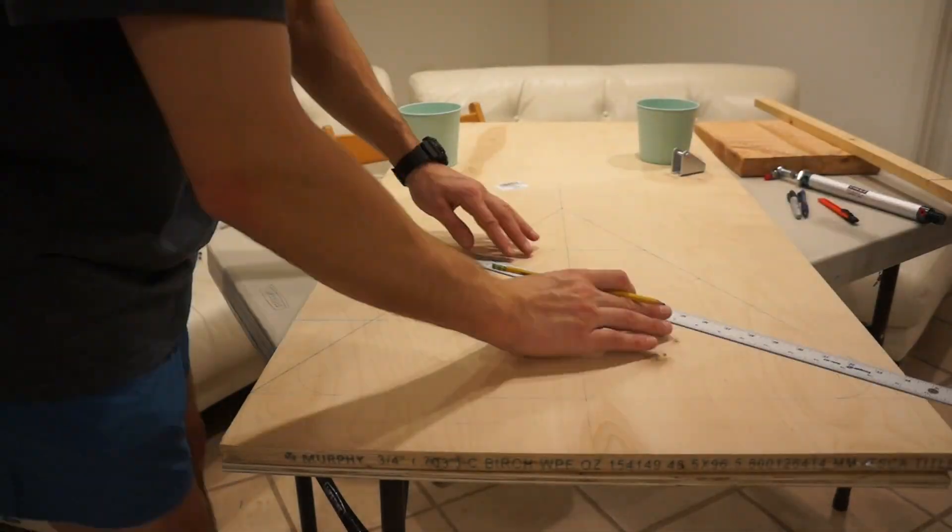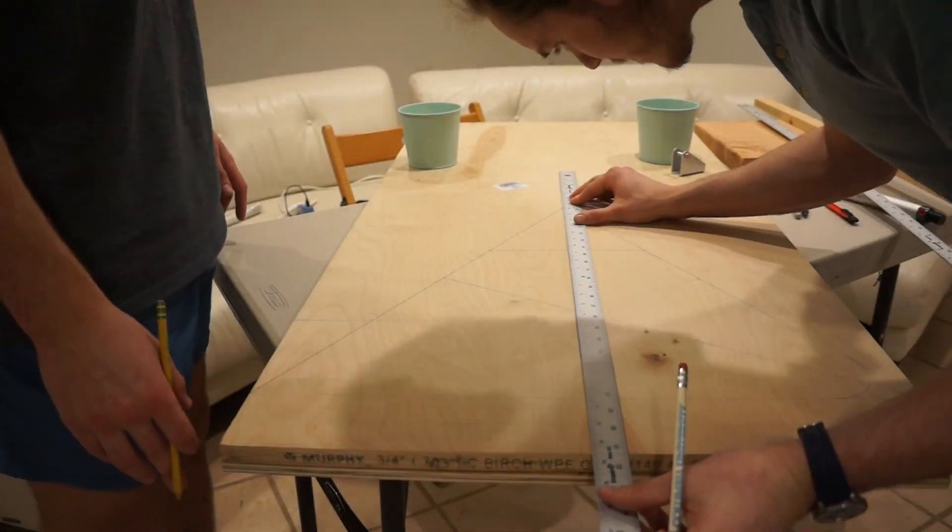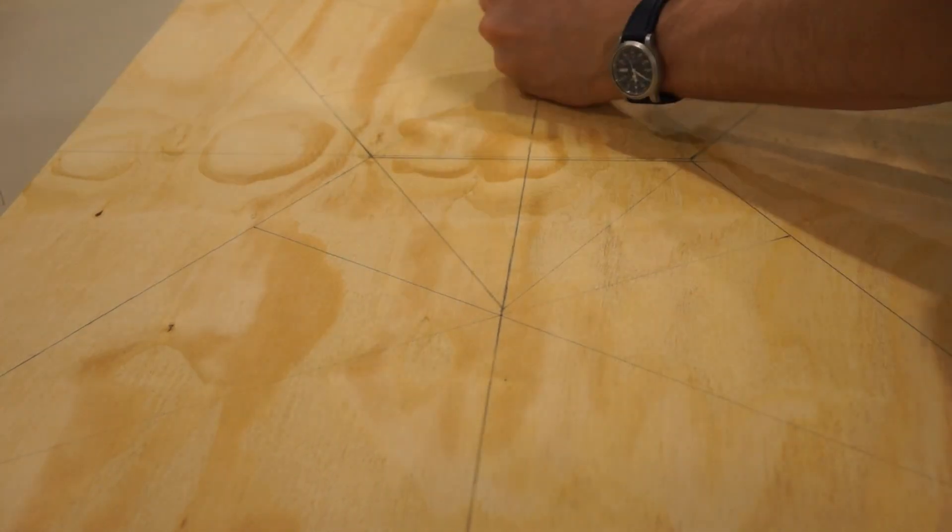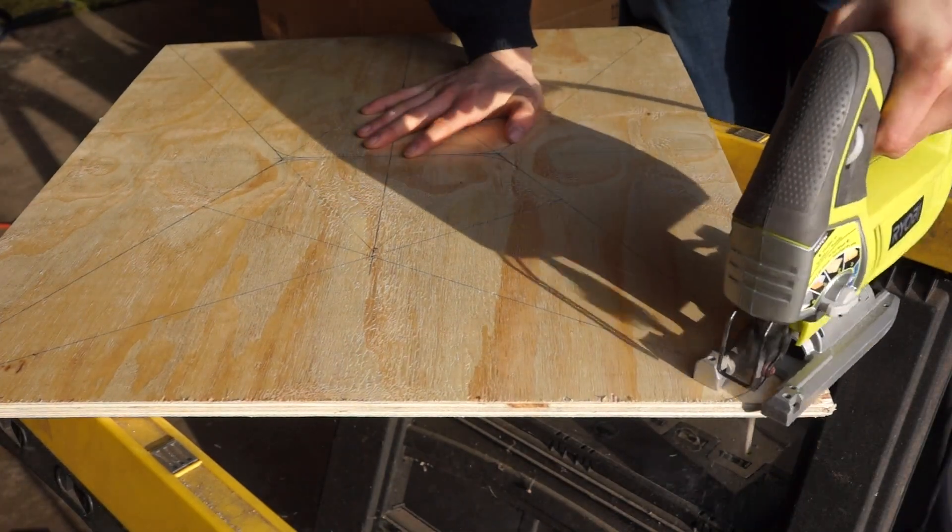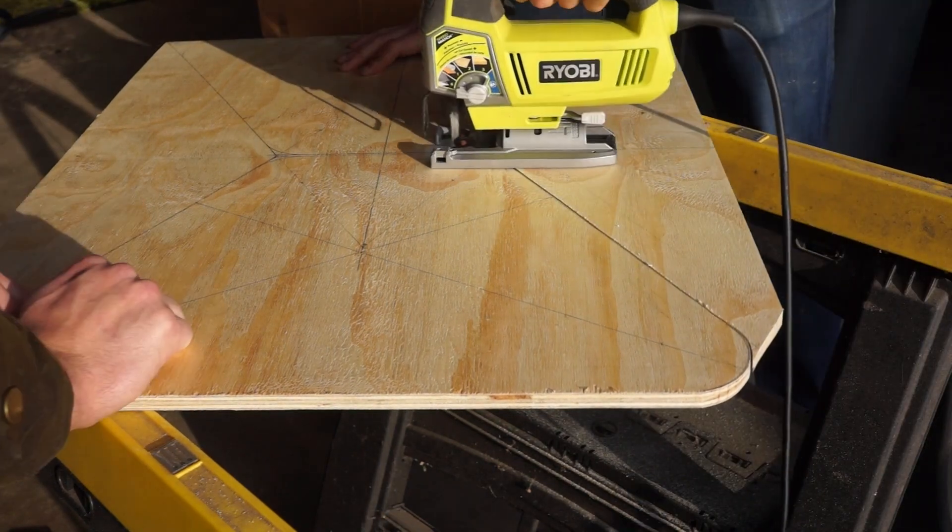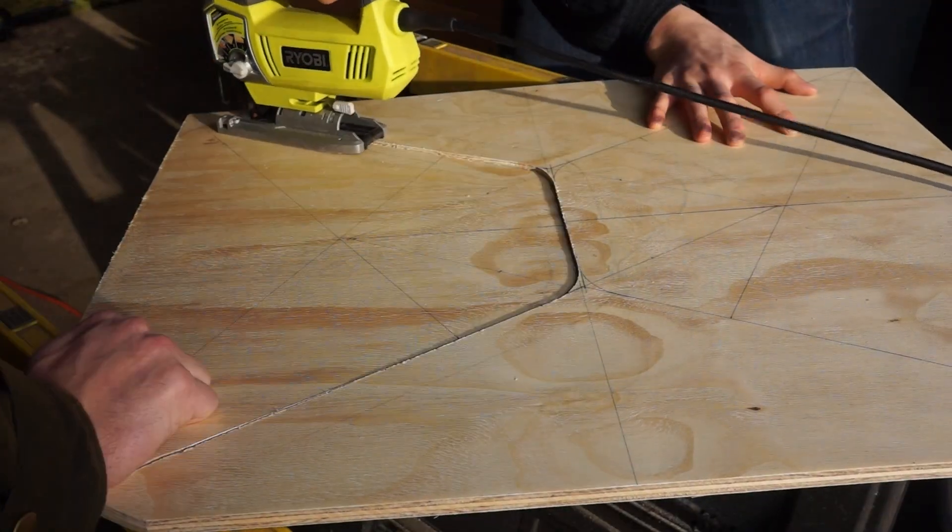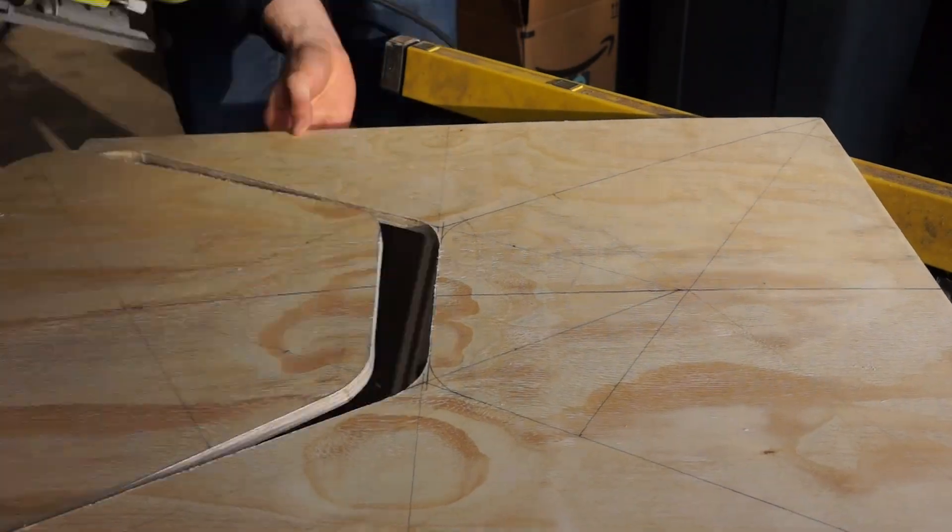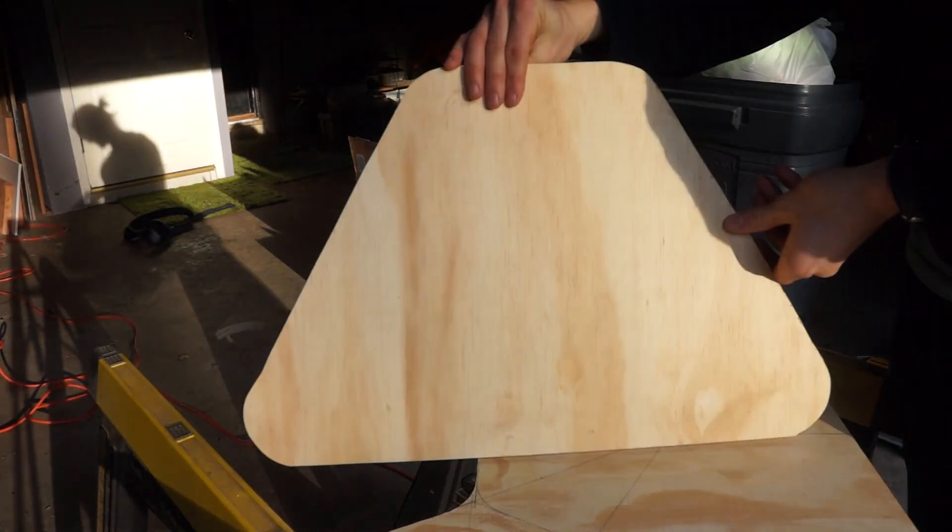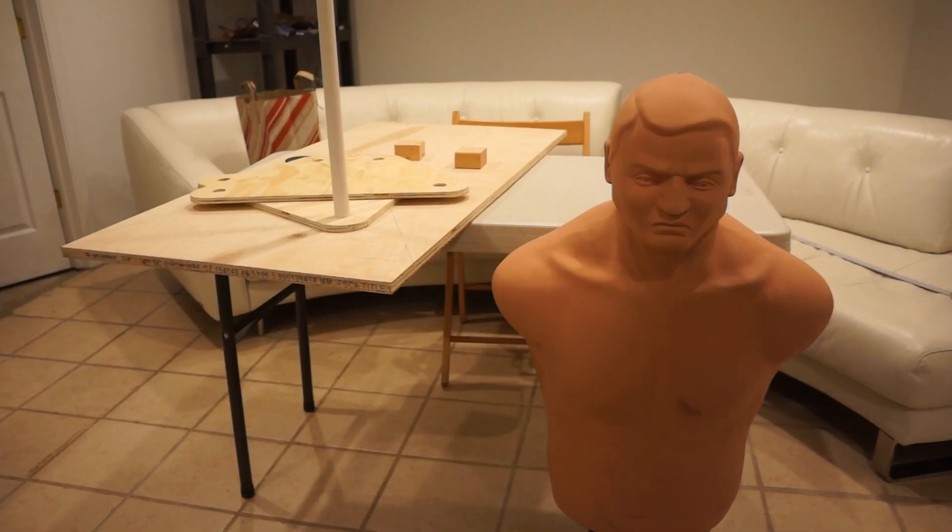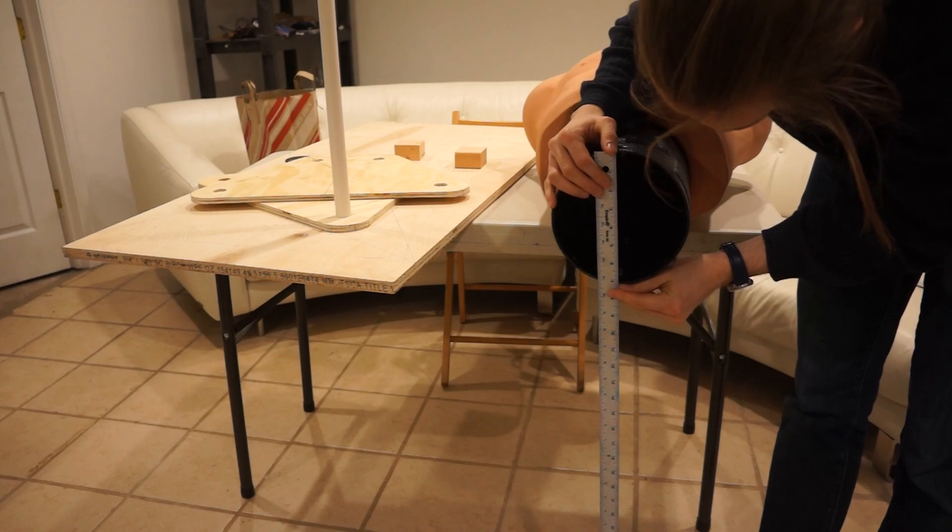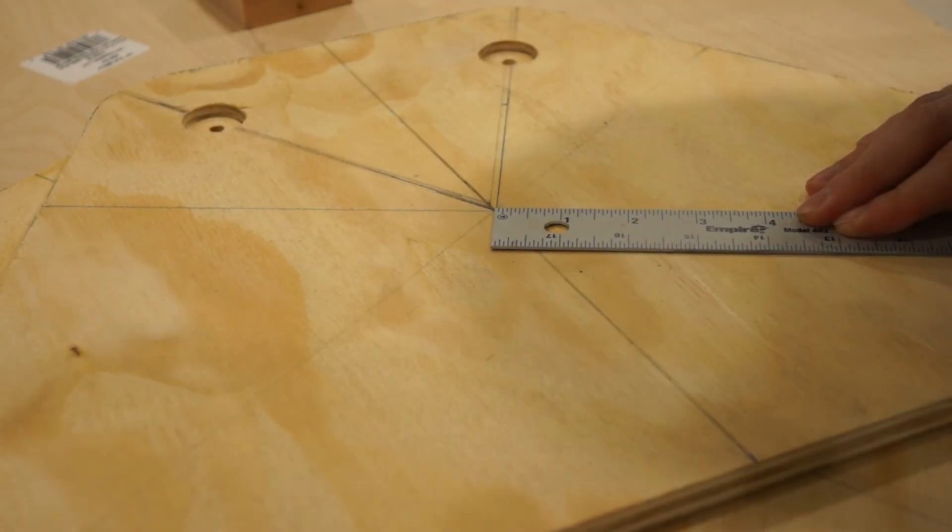We'll start out by making the platform, which will be cut from plywood. Here we're just measuring and drawing where we're going to cut. We'll cut out this shape with a jigsaw. Time to introduce our boxing dummy, Bob. In order to attach him to this frame, we need to cut a hole for his stem, so we'll measure out a 7 inch diameter hole from the center of the platform.